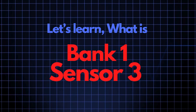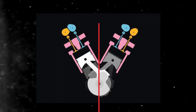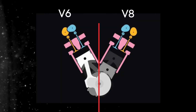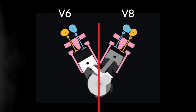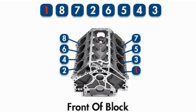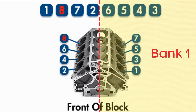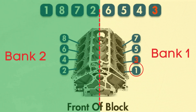Now let's learn what Bank 1 sensor 3 is. In engines with multiple cylinder banks, like V6 or V8 engines, you'll have two sides or banks of cylinders. Bank 1 typically refers to the side of the engine where cylinder 1 is located, and Bank 2 is on the opposite side.